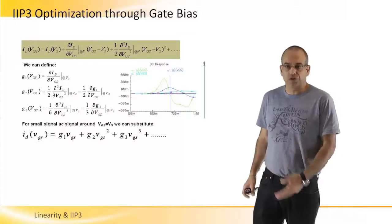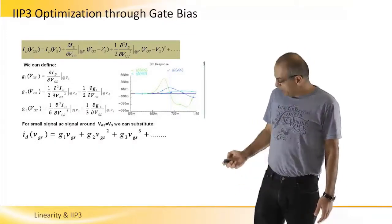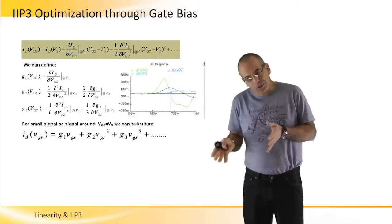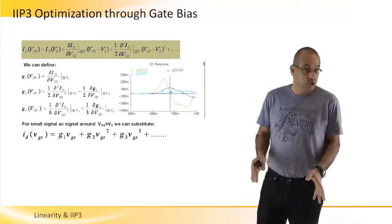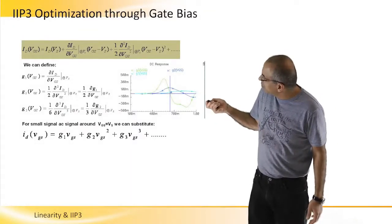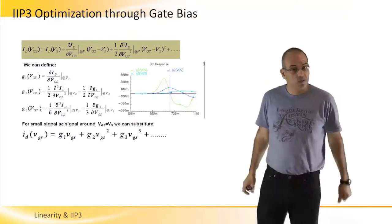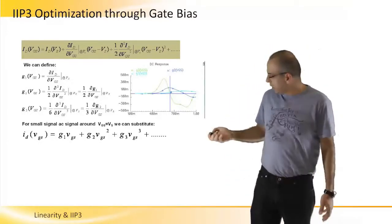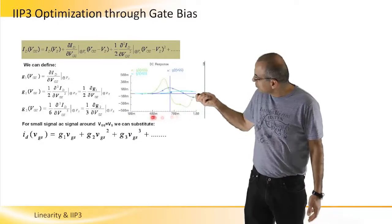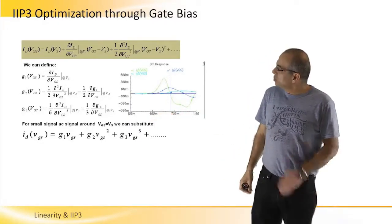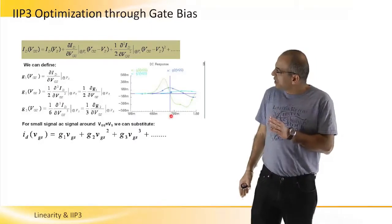So here we have a graph describing the first derivatives of the current, the ID current to VGS. And we can see that if the models are correct enough, which we need to make sure, there is a point where G3 actually zeros. And if we take this point in the VGS axis and we bias to that same VGS, theoretically, we can get an infinite linearity or infinite IIP3 at this specific point.